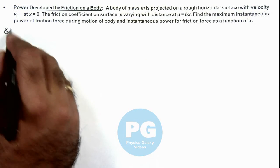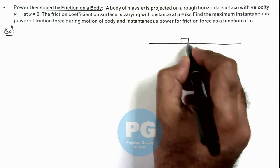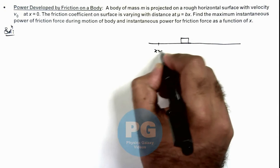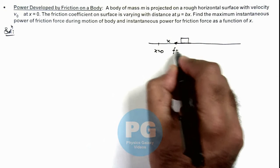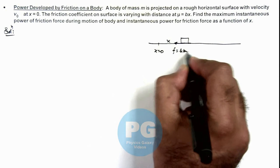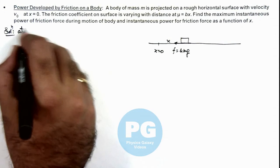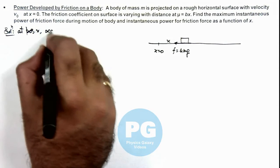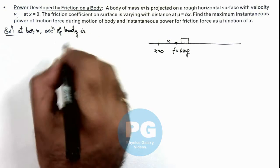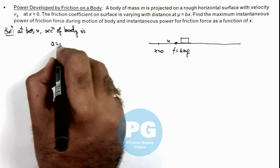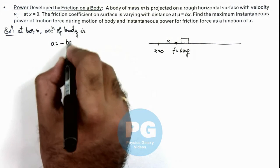In this situation, we can see: if this is a body projected from x equal to zero and right now it is located at position x, the friction acting on it will be mu·mg, and mu can be written as bx. So at position x, the acceleration of the body can be written as minus f/m, which is minus mu·g, which can be written as minus bgx.